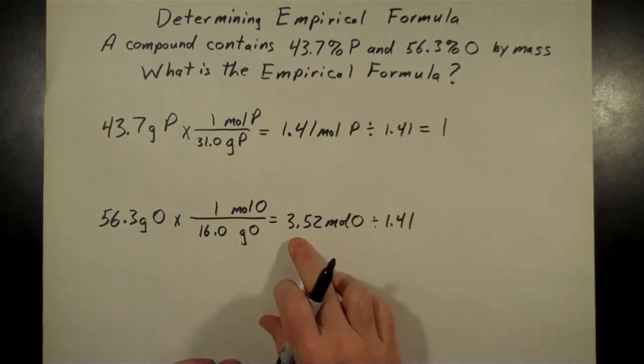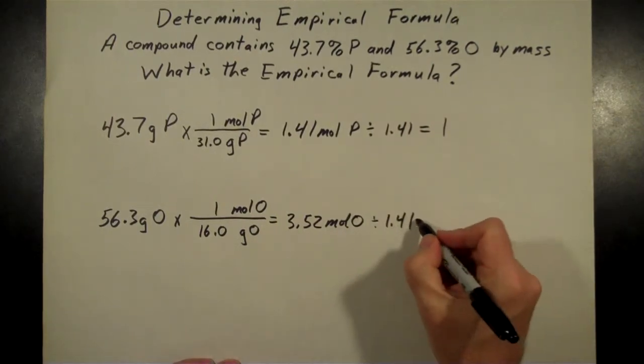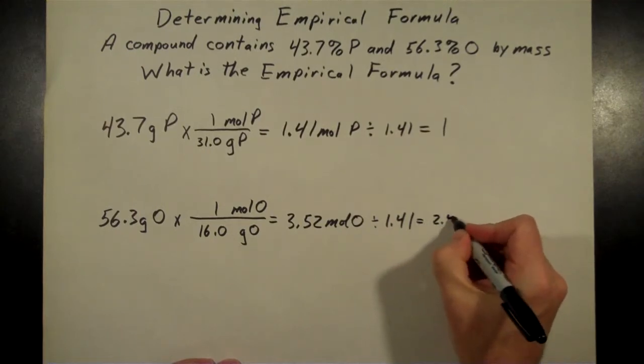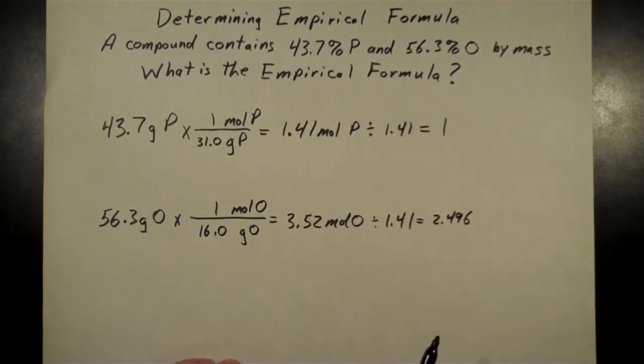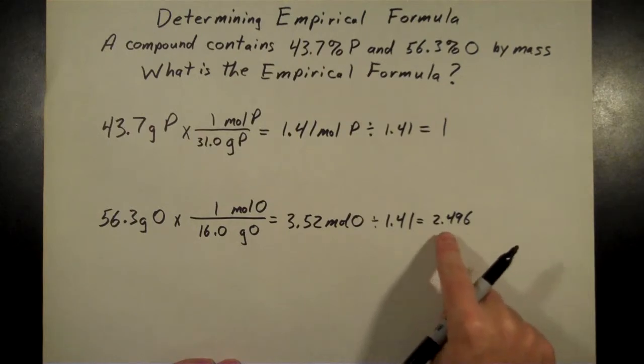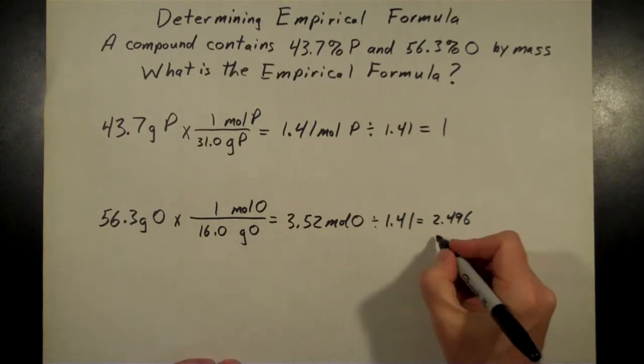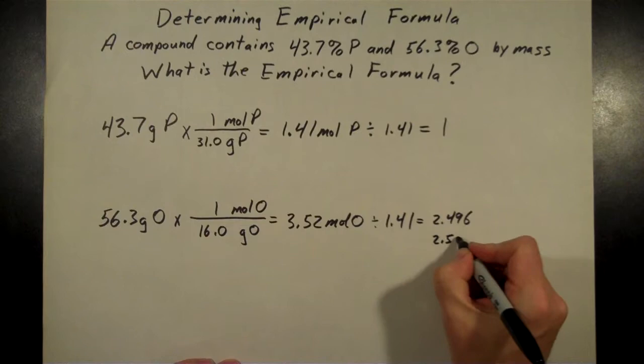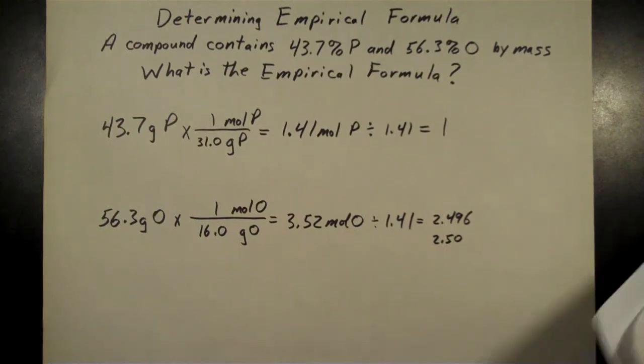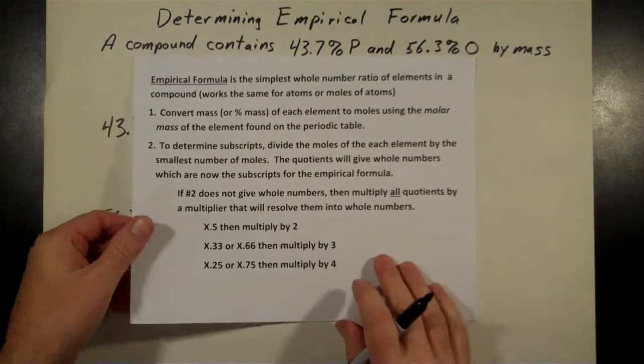3.52 divided by 1.41, that comes out to 2.496, at least on my calculator that's what I got when I plugged that in. I'm going to go to three significant figures, that's what I'm using for everything, so that comes out to 2.50.